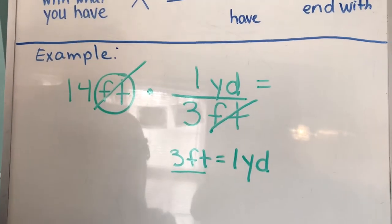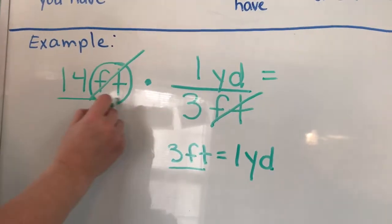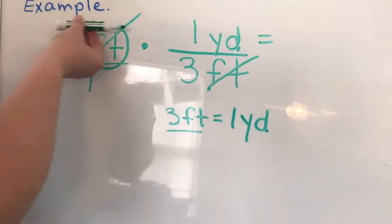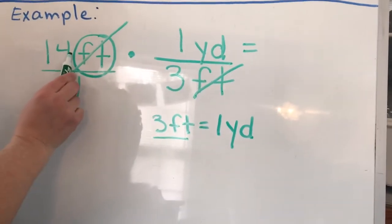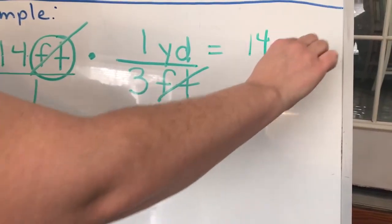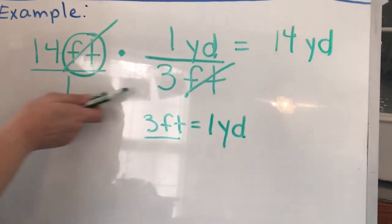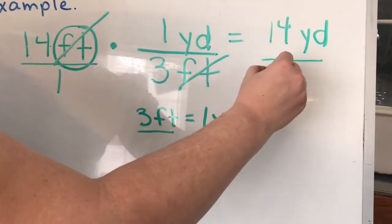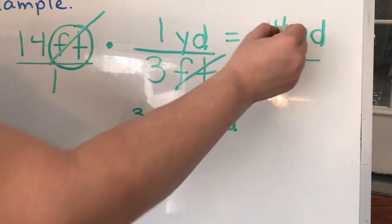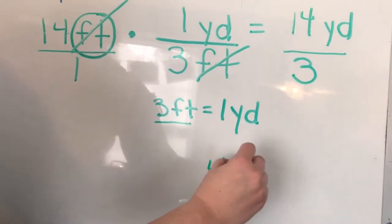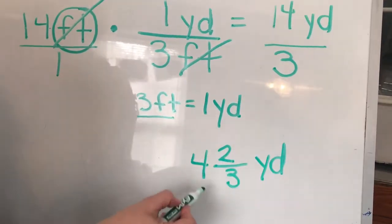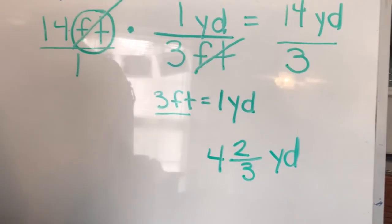Now if you're used to doing fractions, you'll know that it's like an understood 1 under here. So we multiply fractions, we multiply going across. 14 times 1 yard is 14 yards. 1 times 3 is 3. 3 goes into 14 a total of 4 times with 2 left over, over our 3 and we get 4 and 2 thirds of a yard.